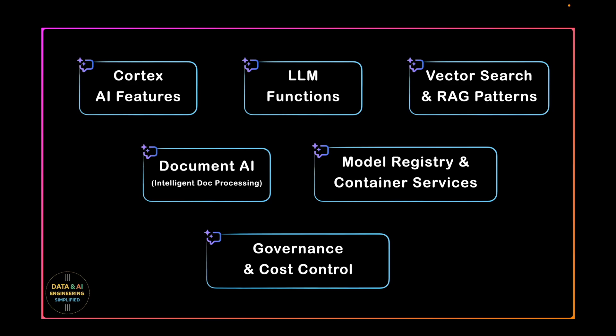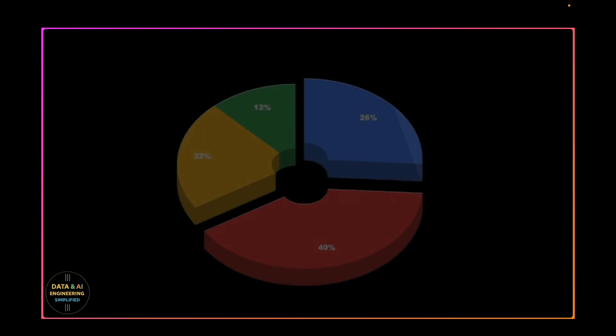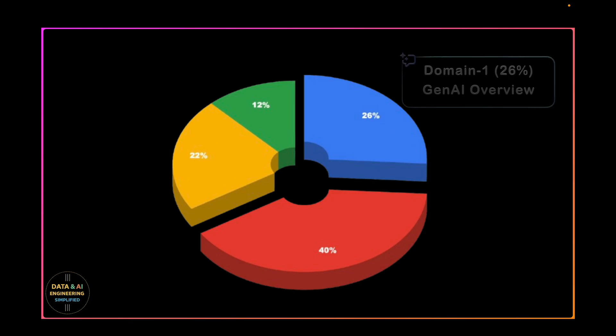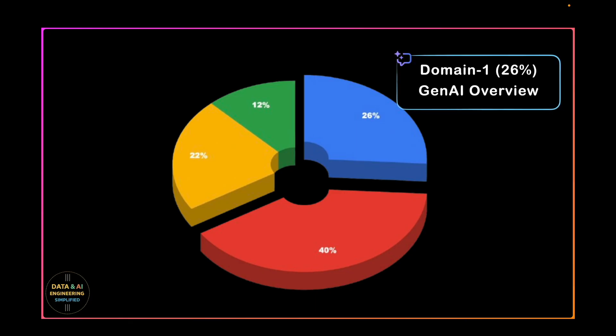Most importantly, governance and cost control when these AI features are applied for enterprise-level use cases. Expect scenario-based questions and subtle syntax differences when it comes to AI SQLs. Domain 1 is Snowflake Gen AI Overview with 26% weightage, having two subsections expecting you to know Snowflake's Gen AI principles, features and best practices, as well as Snowflake Gen AI capabilities.